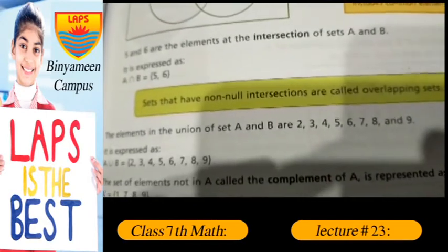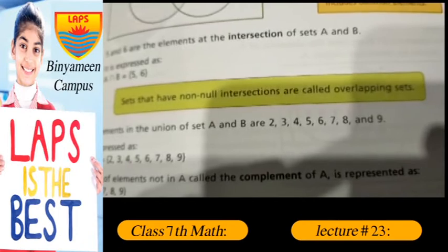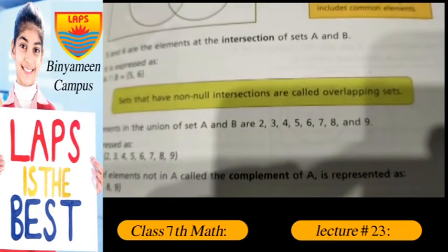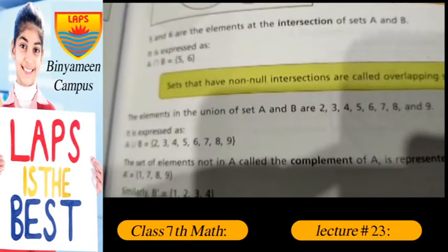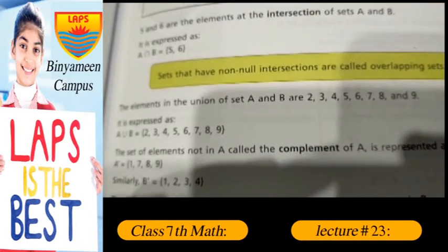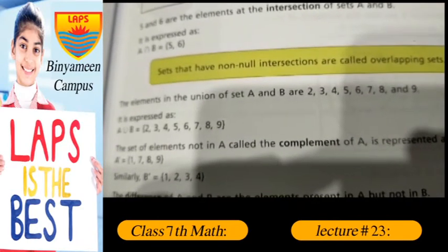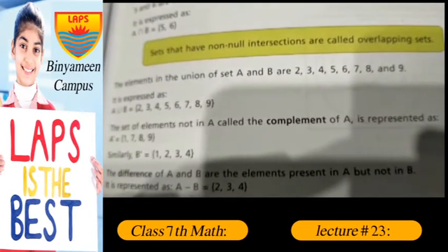The elements in the union of set A and B are 2, 3, 4, 5, 6, 7, 8, 9. It is expressed as A union B: 2, 3, 4, 5, 6, 7, 8, 9.